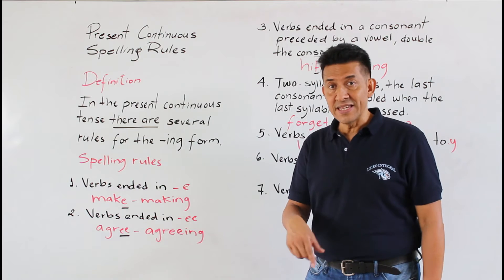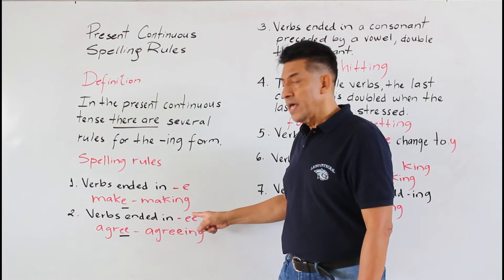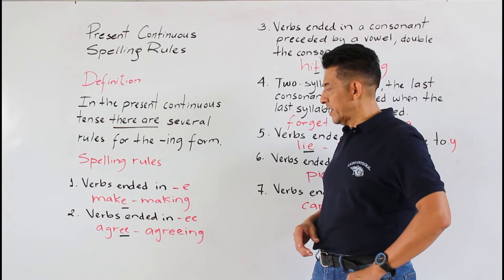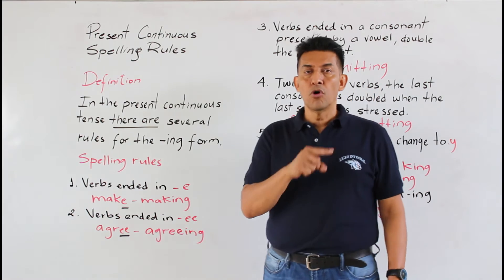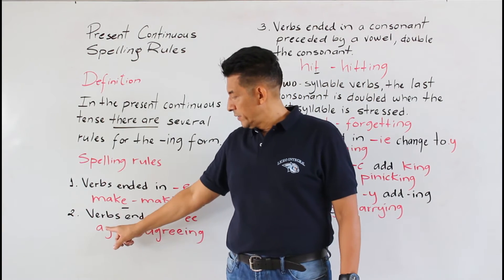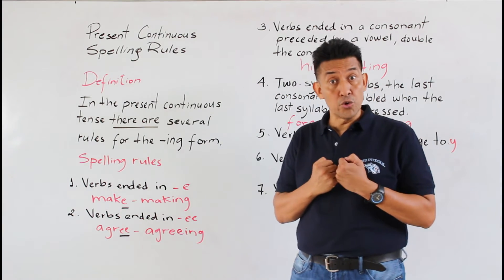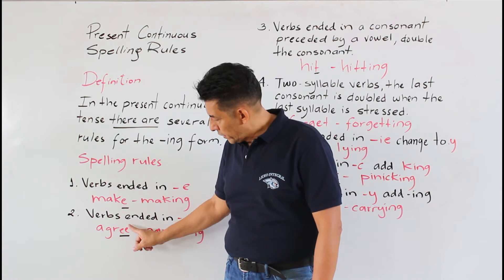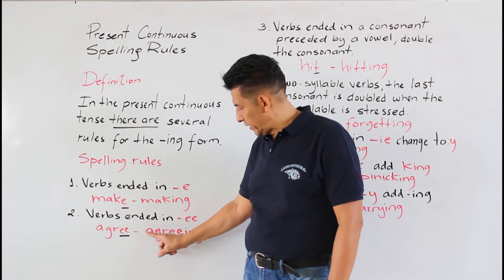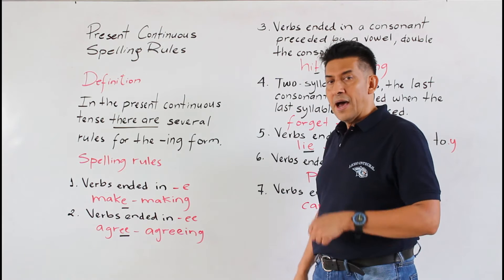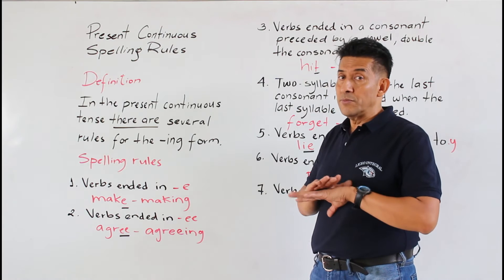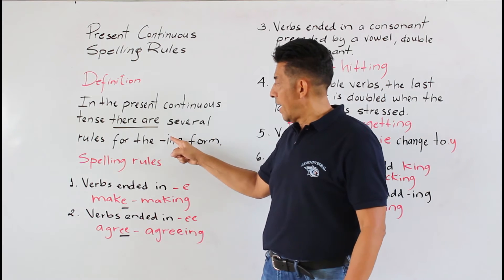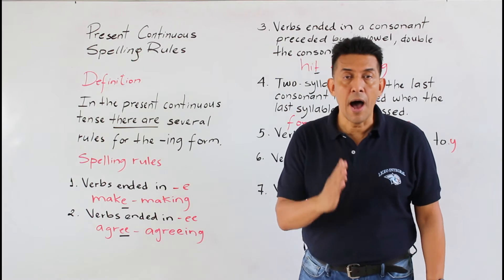La número dos: verbs ending in double E. Son verbos que terminan en terminación doble E, y tenemos un ejemplo: 'agree'. Agree — doble E. ¿Qué sucede? Lo que tenemos que hacer es solamente agregar la regla ING, aquí no omitimos ninguna letra.